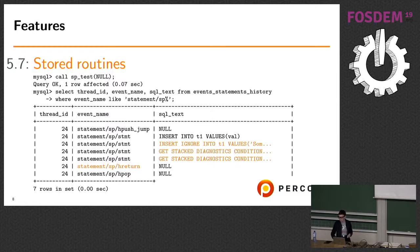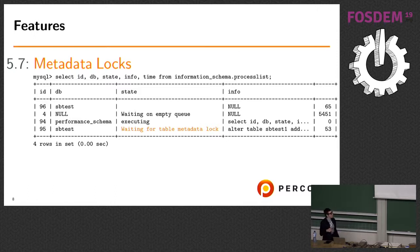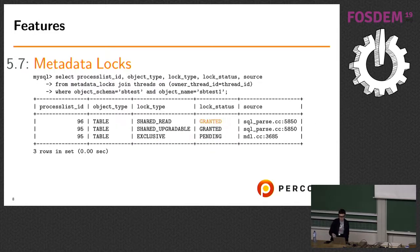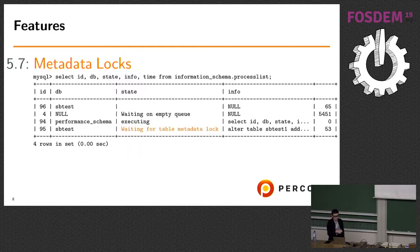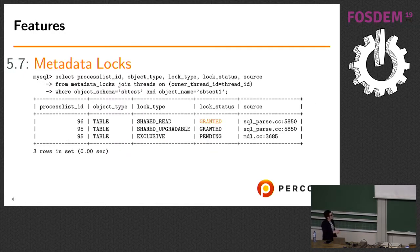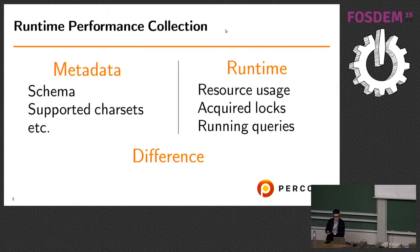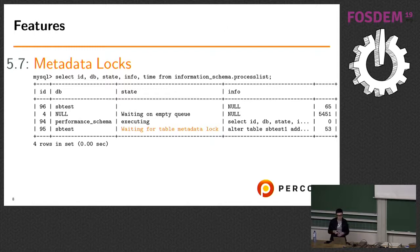Another 5.7 feature: metadata lock visibility. For example, if a table is waiting for a metadata lock, can anyone tell which thread holds that lock? You can't easily determine this, but querying the Performance Schema metadata_locks table tells you clearly — for example, thread 95 holds a shared upgradable lock and is waiting for an exclusive lock, while thread 96 holds the lock.